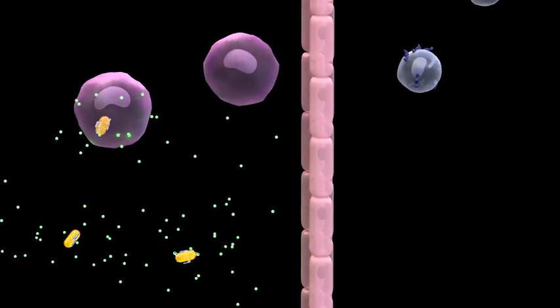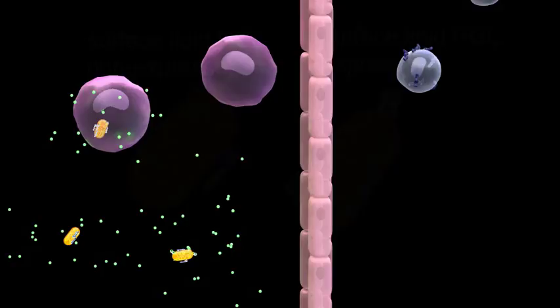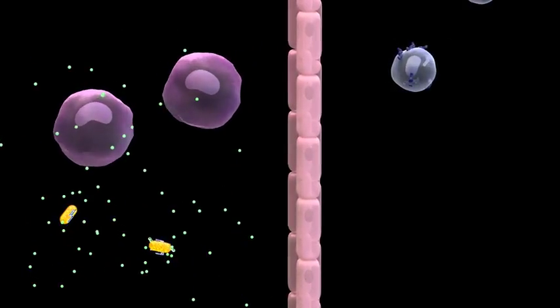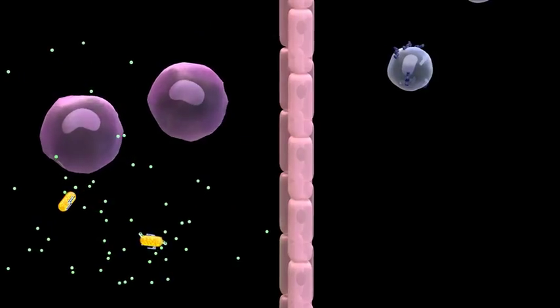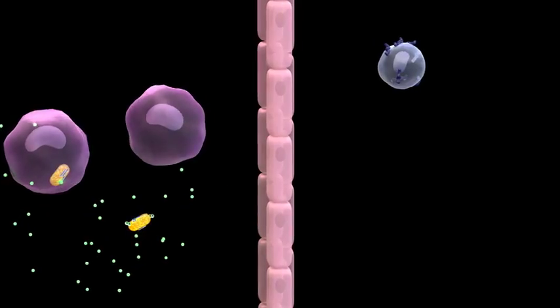As we shall see, many strains of mycobacteria express a special surface lipid called phenolic glycolipid, or PGL, that allows them to escape out of the alveolar macrophage that is trying to kill it. First, let's see what happens to mycobacteria that do not express PGL. They get taken up by the alveolar macrophages and killed.